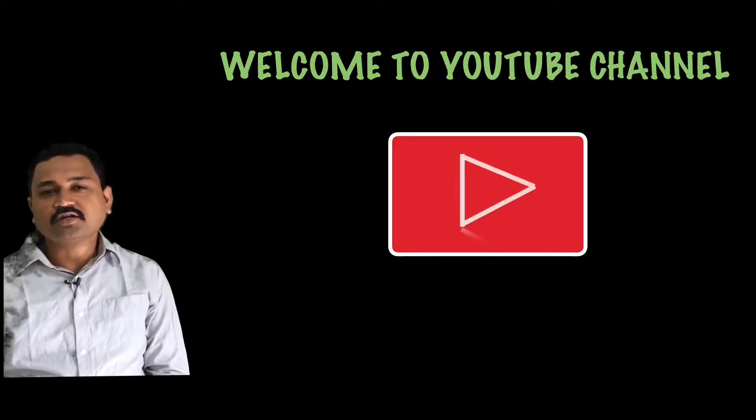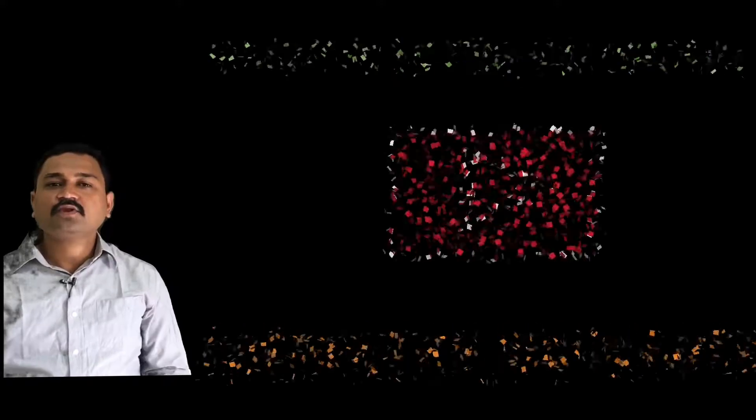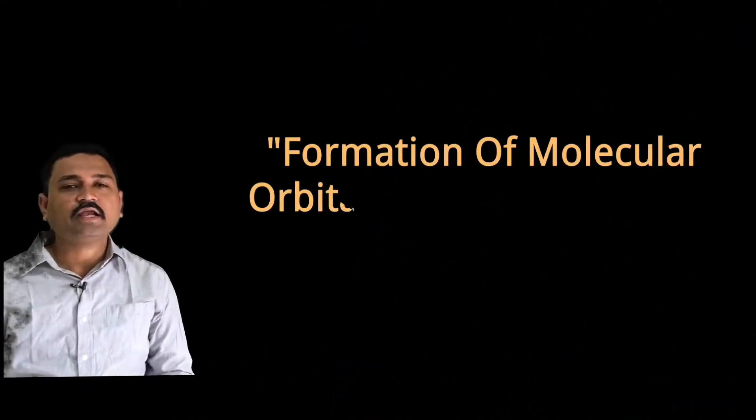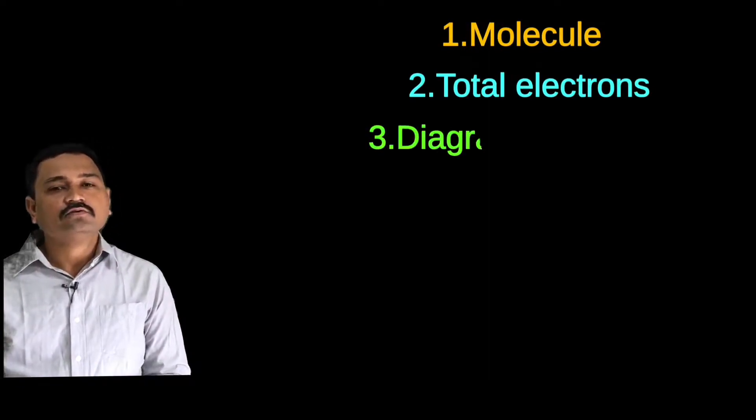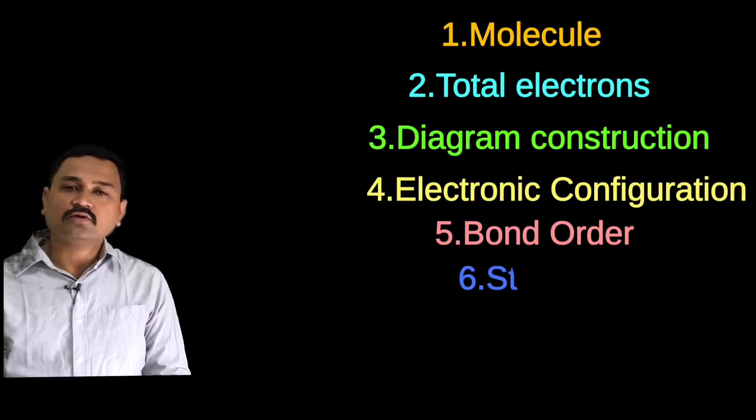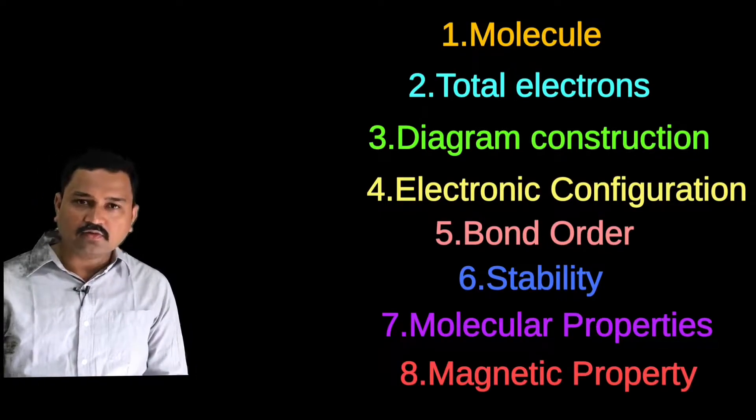Hello dear friends, welcome back to my YouTube channel Chemistry Aspirant. In today's lecture we are going to learn about the formation of the molecular orbital energy level diagram for the nitrogen molecule. In the previous lecture we already learned about the formation of the molecular orbital energy level diagram for carbon molecule — the link is given in the card, kindly watch that video also. Here we are going to follow eight important points to explain the formation of nitrogen molecule using molecular orbital theory, so I request you to kindly watch this video till the end.